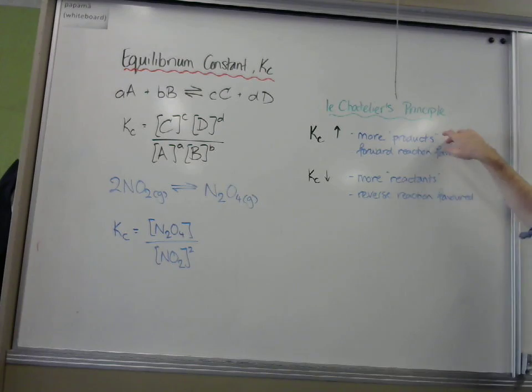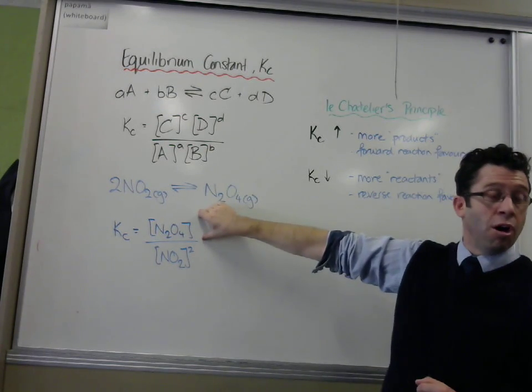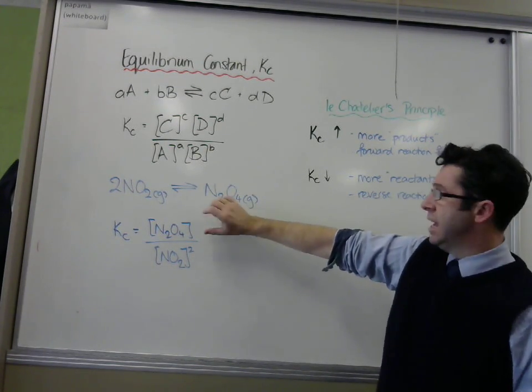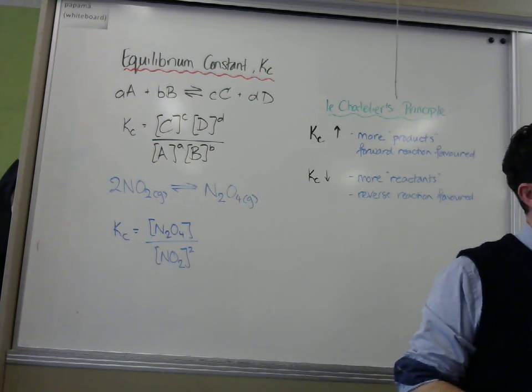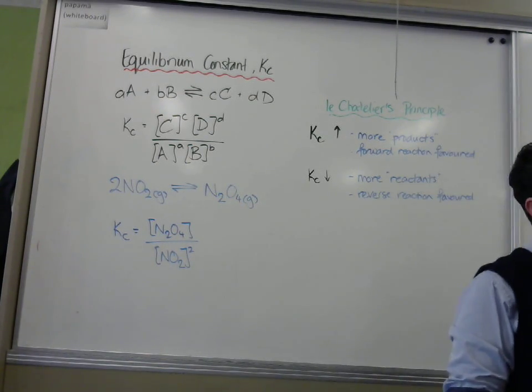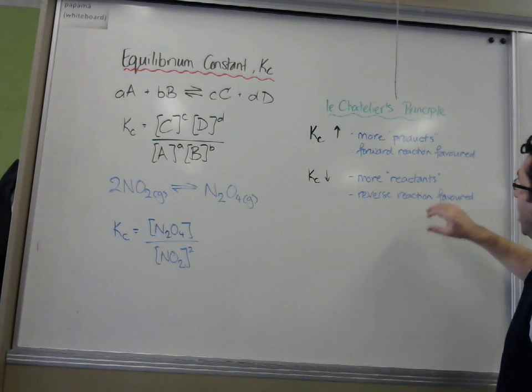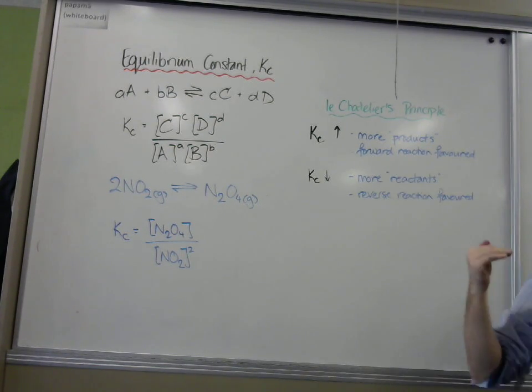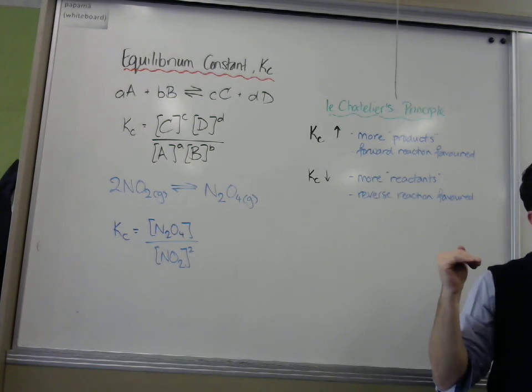What it means is if the Kc value gets bigger after you've done something, it means you've made more of the products. Because the number on the top has got bigger, and the number on the bottom has got smaller. That means the forward reaction has been favored until a new equilibrium has been established.